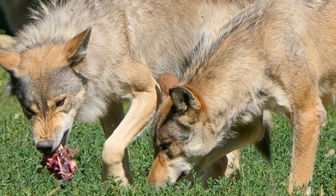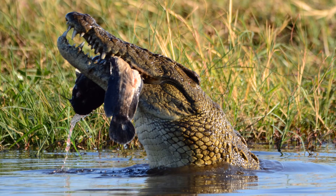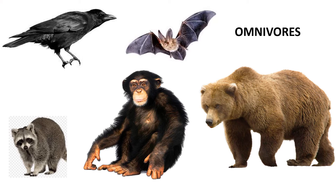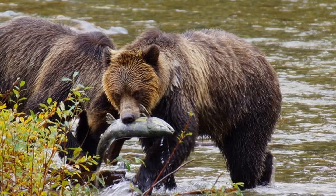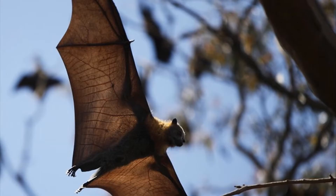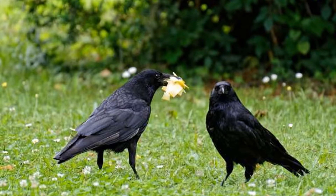Carnivores include wolf and crocodile. Some animals eat both plants and other animals; they are called omnivores. For example: bear, bat, and crow.